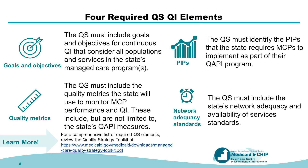Your quality strategy contains rich information on your state's managed care quality activities. In the following slides, we will focus on four key quality improvement elements: one, goals and objectives for continuous quality improvement; two, quality metrics; three, PIPs; and four, network adequacy and availability of services standards.